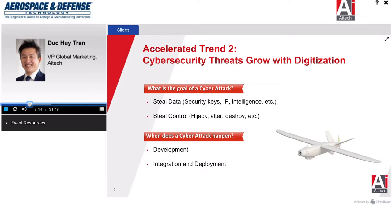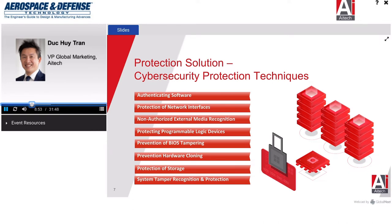Cybersecurity threats happen not only once the system is deployed, but during the development of the system as well. They can steal data while you're developing a product, and at the tail end, they can take control of your drone, hijack it, or disrupt it. The cybersecurity threat is something we take very seriously. This is an example of some of the cyber protection techniques we use: authenticating software, protecting against network intrusion, preventing hardware cloning, and protection of storage.